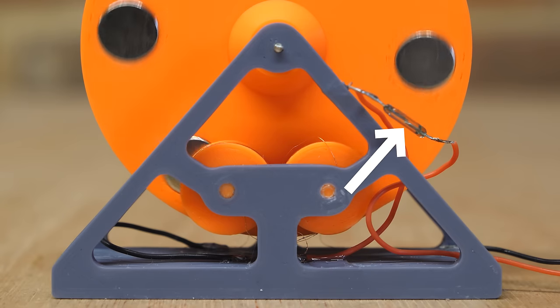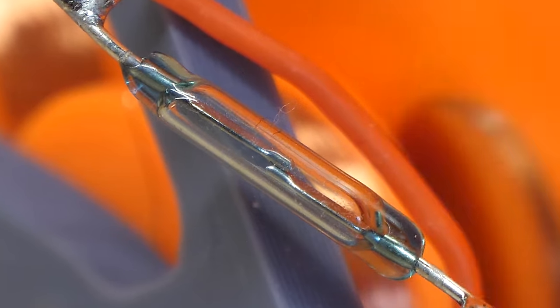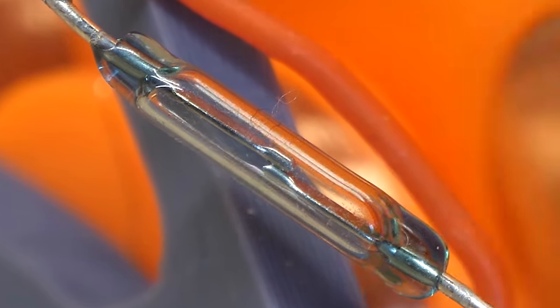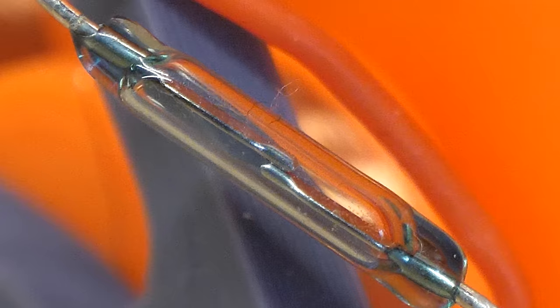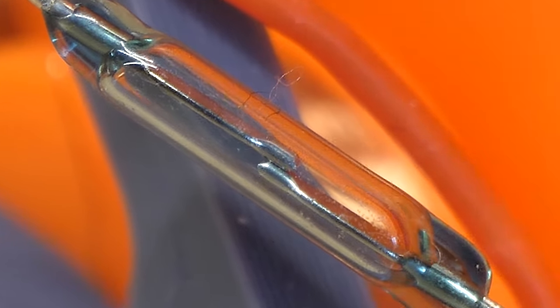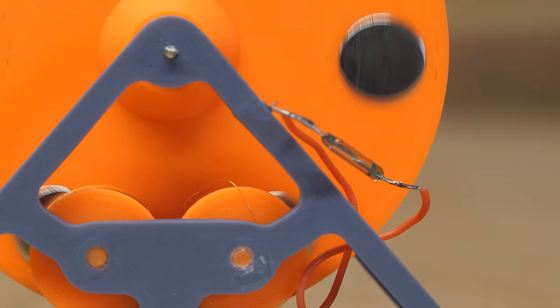And this timing is controlled by a small component called a reed switch. A reed switch has two thin metal arms inside of a glass capsule. And when a magnet is close to the switch, the two arms are attracted together and make contact, allowing current to flow through the circuit. And as you can imagine, the position of this reed switch is very important to how well the motor runs.